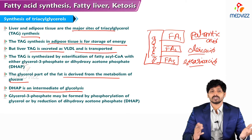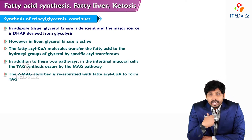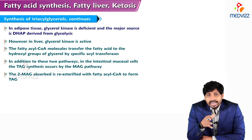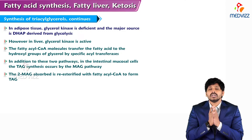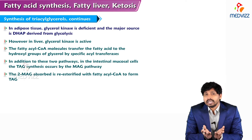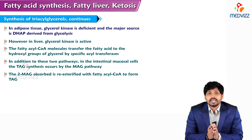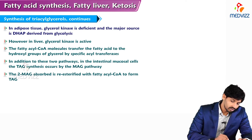Glycerol-3-phosphate may be formed by phosphorylation of glycerol or by reduction of dihydroxyacetone phosphate. In adipose tissue, glycerol kinase is deficient, and the major source is dihydroxyacetone phosphate derived from glycolysis. However, in liver, glycerol kinase is active.